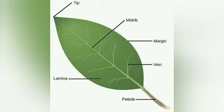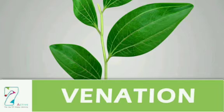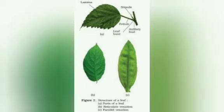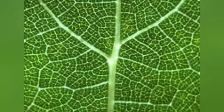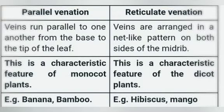Now what is venation? The veins are what carry the food. Coming to the venation of the leaves — how are the veins of the leaf distributed inside the leaf? You will have seen a number of types of leaves which might have different venations: some reticulate and other parallel venations. When the venation is in the form of a network — a mesh-like structure — we say that is reticulate venation. And when the veins are parallel to each other, we say it is parallel venation. Veins which run parallel to one another from the base to the tip of the leaf is parallel venation, whereas veins arranged in a net-like pattern on both sides of the midrib is reticulate venation.